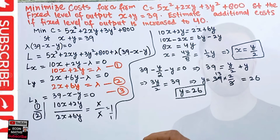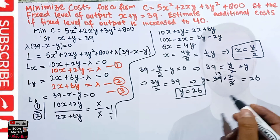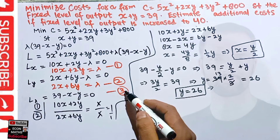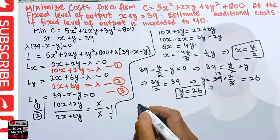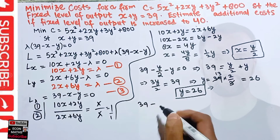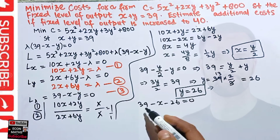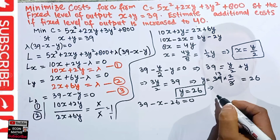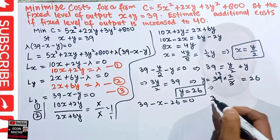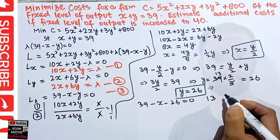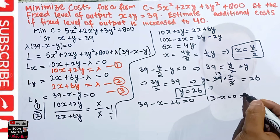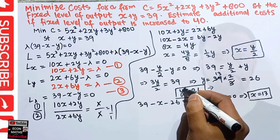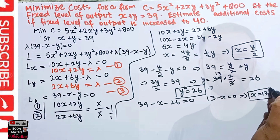Now to find the optimal value of x, we plug y = 26 back into equation three: 39 − x − 26 = 0. So 39 − 26 = 13, meaning 13 − x = 0, which gives x = 13. The optimal value of y is 26 and the optimal value of x is 13.